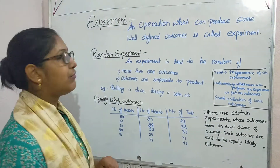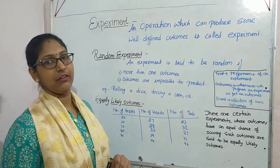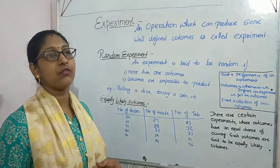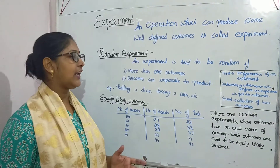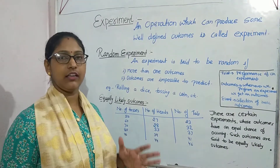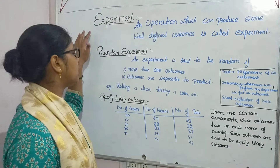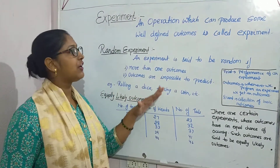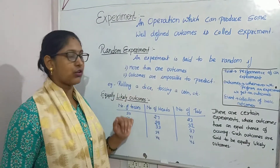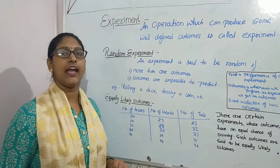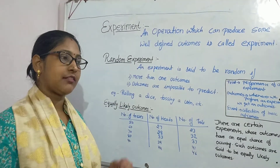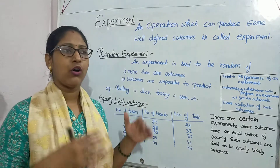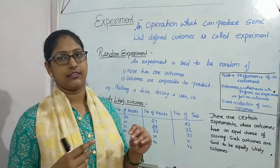In this video, we learn some keywords like experiment, random experiment, equally likely experiment, trial, outcomes and event. First, we start with the keyword experiment. An operation which can produce some well-defined outcomes is called experiment, just like experiments done by us in our science lab or experiments done by scientists.